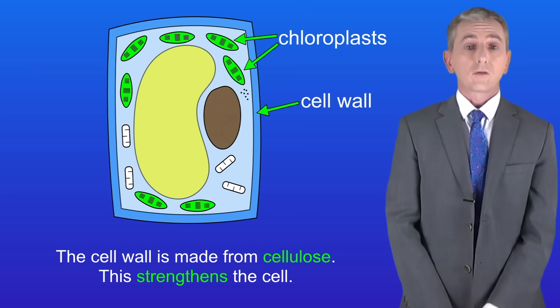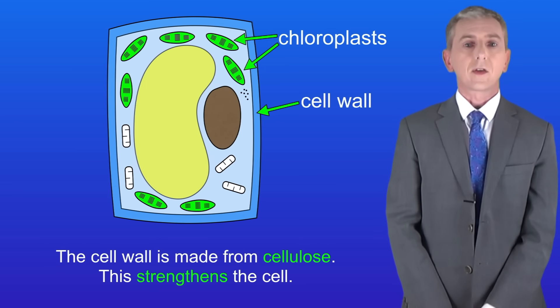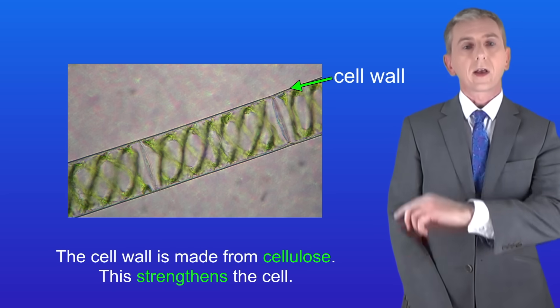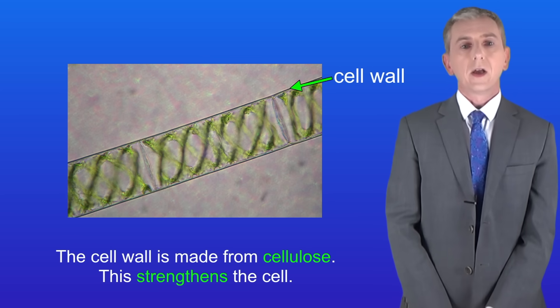Plant cells are surrounded by a cell wall and the cell wall is made from a chemical called cellulose which strengthens the cell. I'm showing you here a picture of cells from an algae. Algae are a very simple form of plant life and you can see that they've also got a cellulose cell wall.